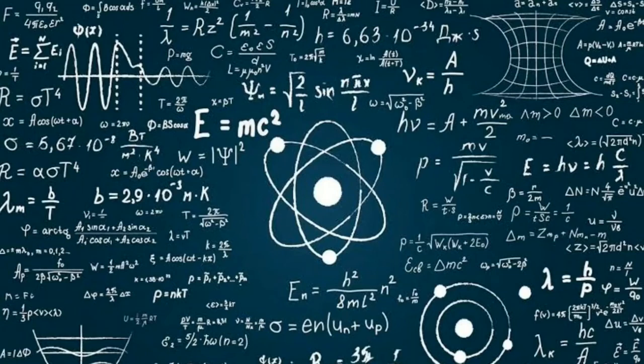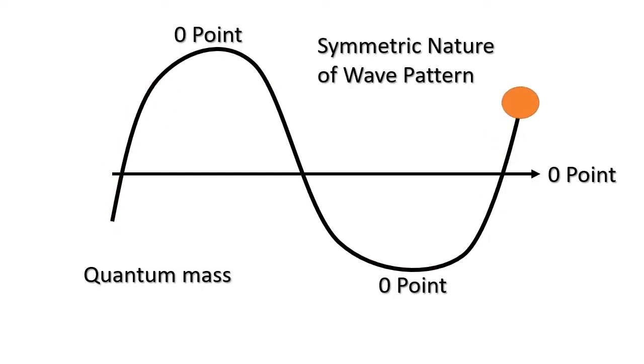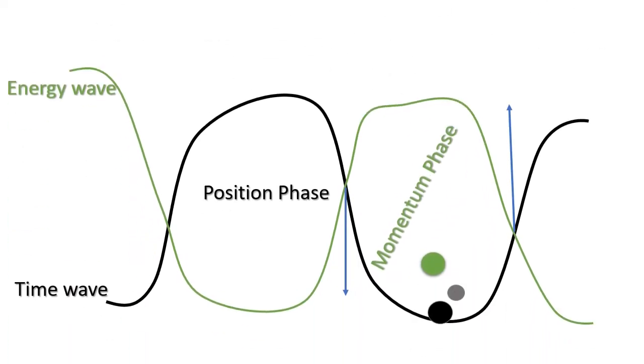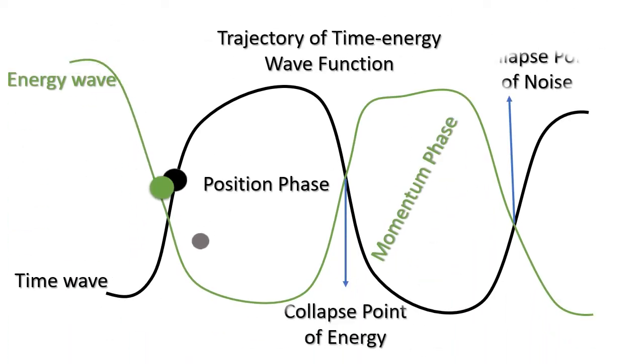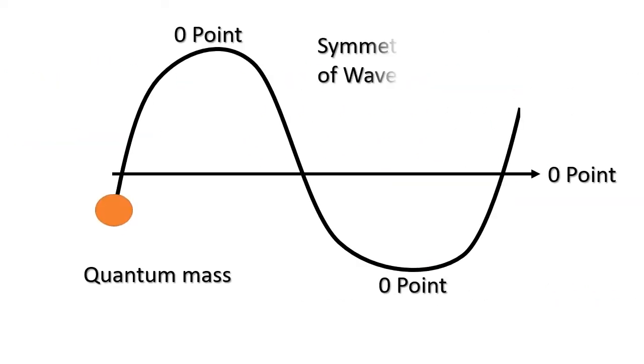For example, wave pattern is symmetrical by having maxima, minima, and void. Meanwhile, zero is the point where time and energy are independent of each other.